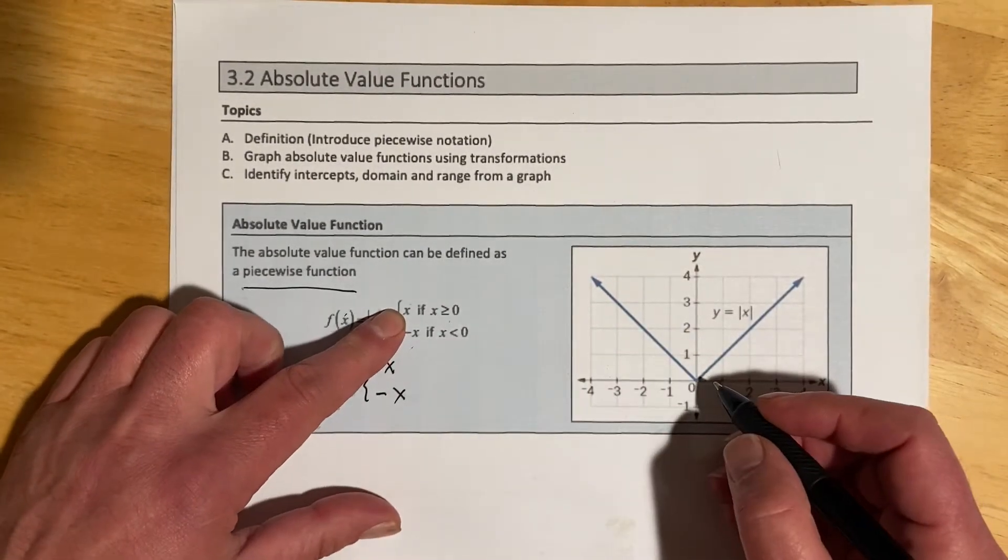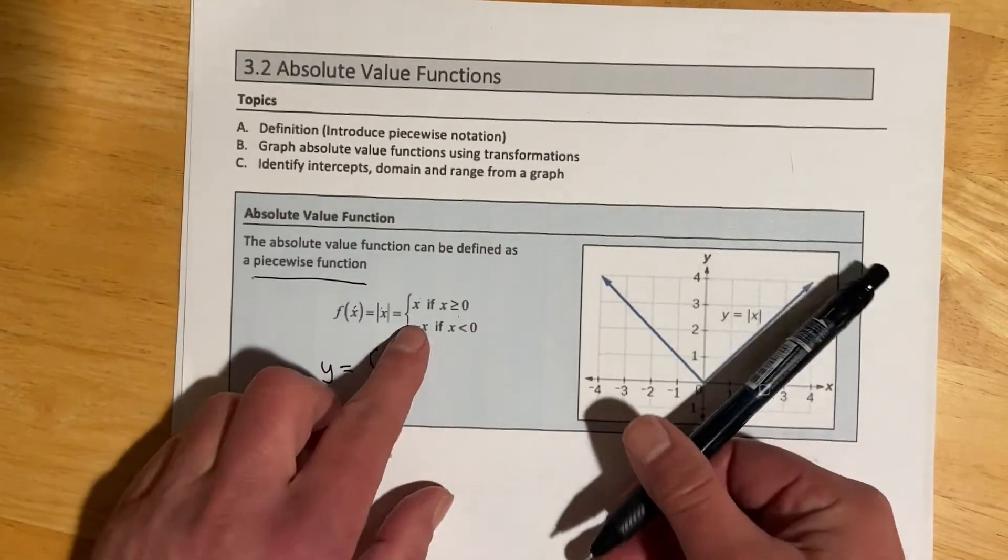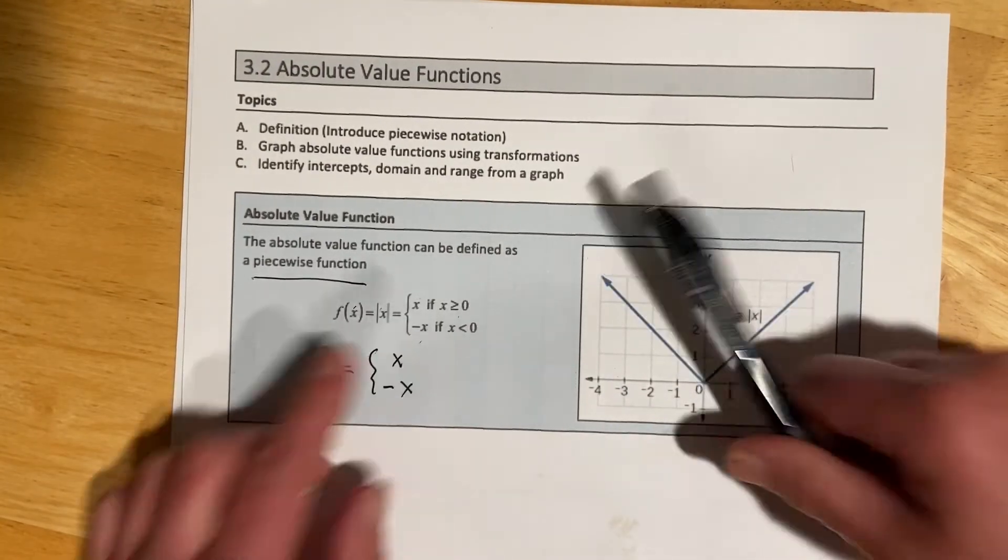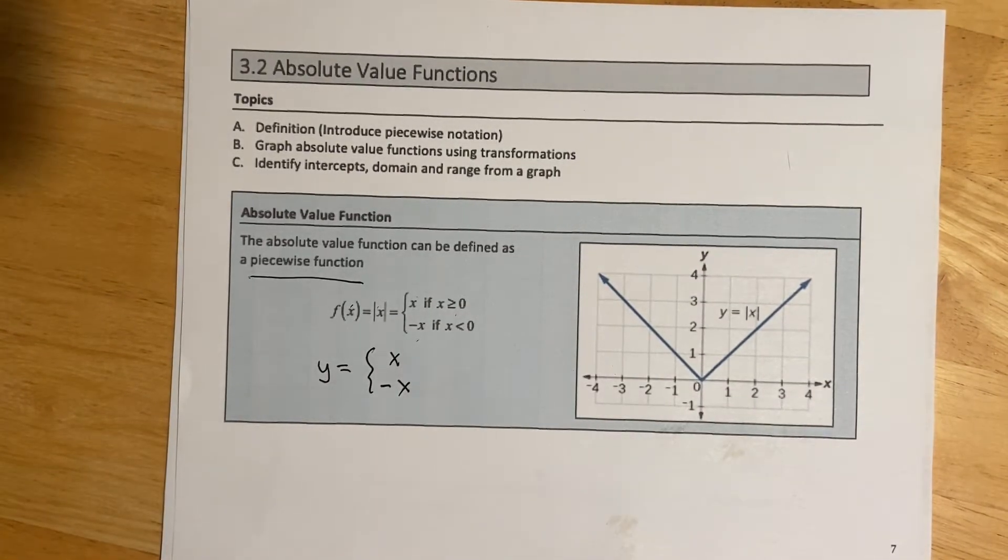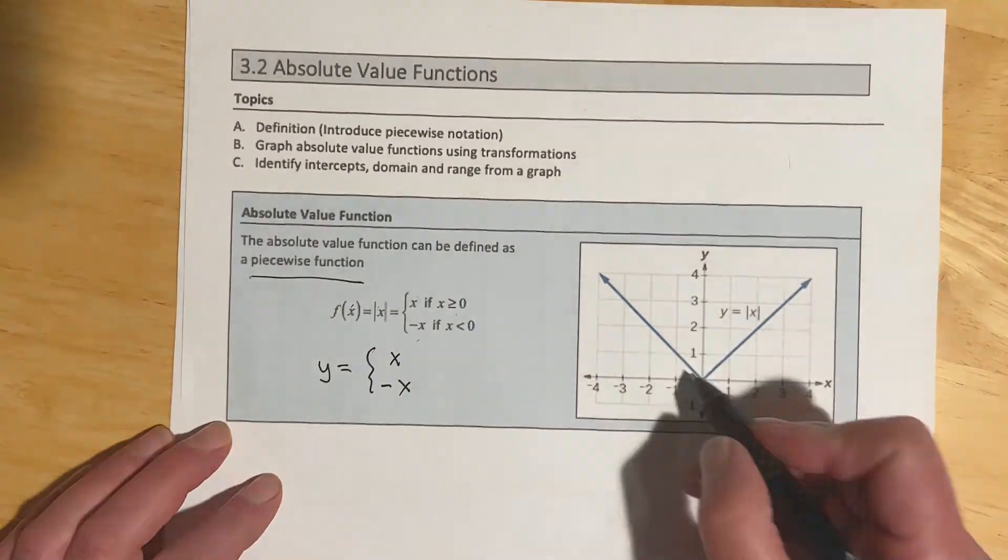x would be a slope of 1 through the origin. Negative x is a slope of negative 1 through the origin. Sometimes there are things you cannot describe with one equation, and that's where piecewise functions come in.